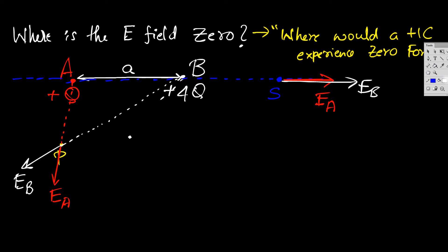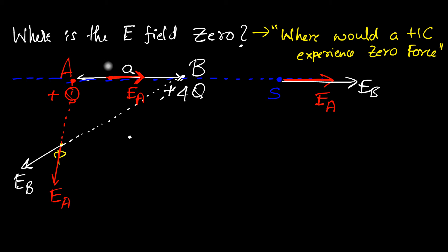Let's go between A and B and check what's going to happen. At a random point X between them, charge A creates an electric field pointing away from A, and the electric field due to charge B at that same point is pointing in the opposite direction — away from B. And that's exactly what we want: the two fields to cancel out. Now I don't know exactly where X should be, because we have to make sure the magnitudes are also equal. But the directions are opposite, so there's a good chance we'll find a point where the electric field is zero.